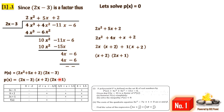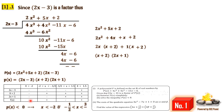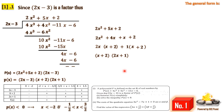To solve p(x) less than zero, we take the intervals where the sign is negative. Therefore p(x) less than zero implies x less than negative 2 union the interval from negative one-half to 3/2. This completes part (b) of question one.